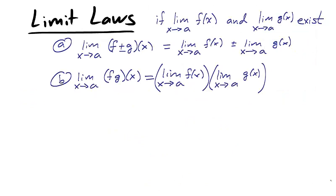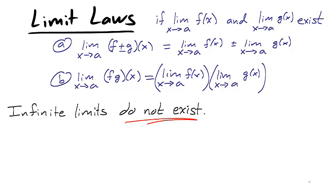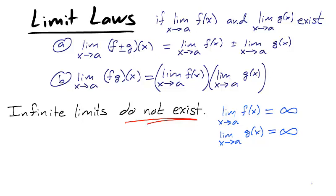In section 1.6, we obtained the limit laws for addition and multiplication. The limit of a sum can be calculated as the sum of the limits, provided that each limit exists. The same holds true for multiplication and subtraction. Keep in mind, however, that limits which are equal to infinity or negative infinity actually do not exist. Though they don't exist, in certain cases the limit of the sum of two functions can be calculated for limits which are infinite.